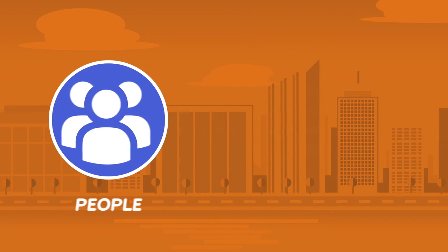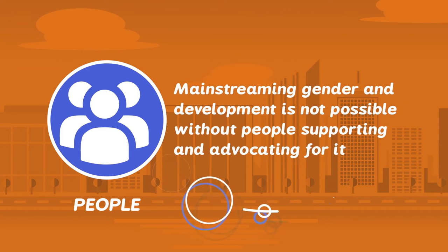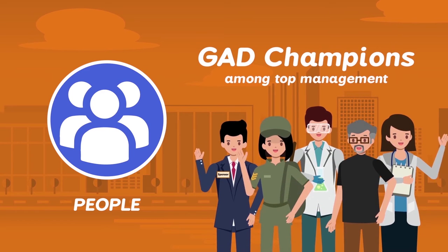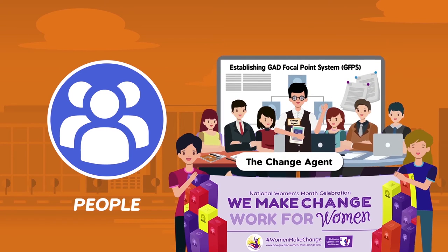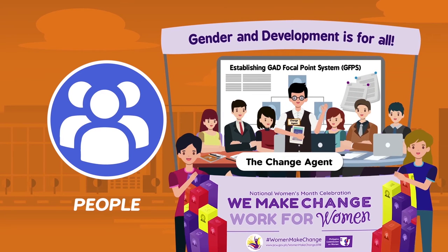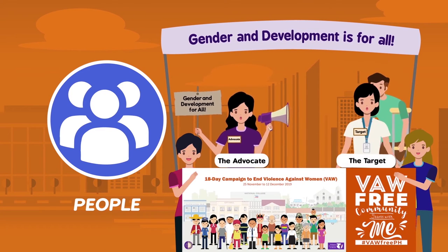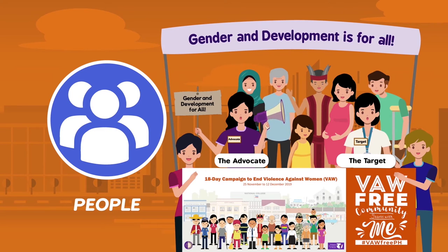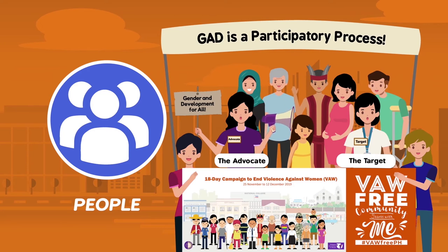The second entry point is People. Mainstreaming gender in development is not possible without people supporting and advocating for it. Critical to the success of gender mainstreaming are the GAD champions among top management. The organization should also establish a GAD focal point system that will lead its gender mainstreaming efforts and serve as GAD experts. The organization must also ensure that its internal and external clients are able to participate in the planning, implementation, and monitoring and evaluation of GAD programs, activities, and projects. GAD is a participatory process.